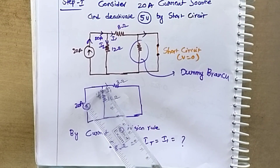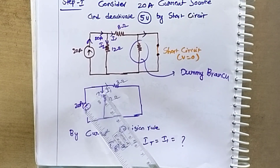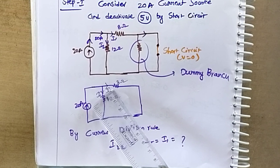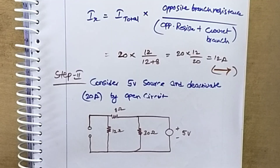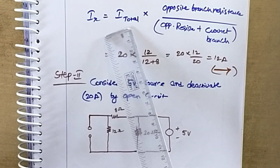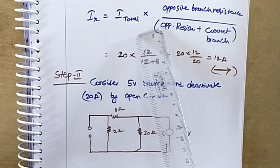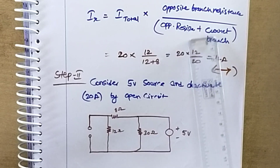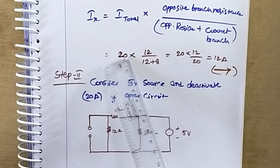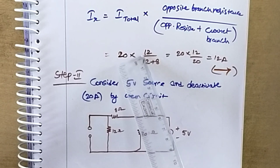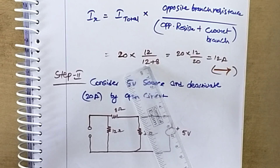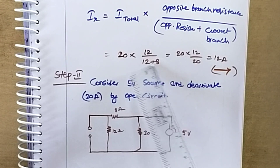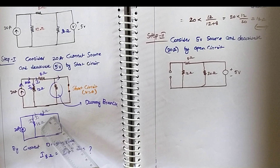The current division rule states: current through any branch equals total current multiplied by the opposite branch resistance, divided by the sum of opposite branch resistance and the current branch resistance. Here, total current is 20 amps, opposite branch resistance is 12 ohm, and present branch resistance is 8 ohm.